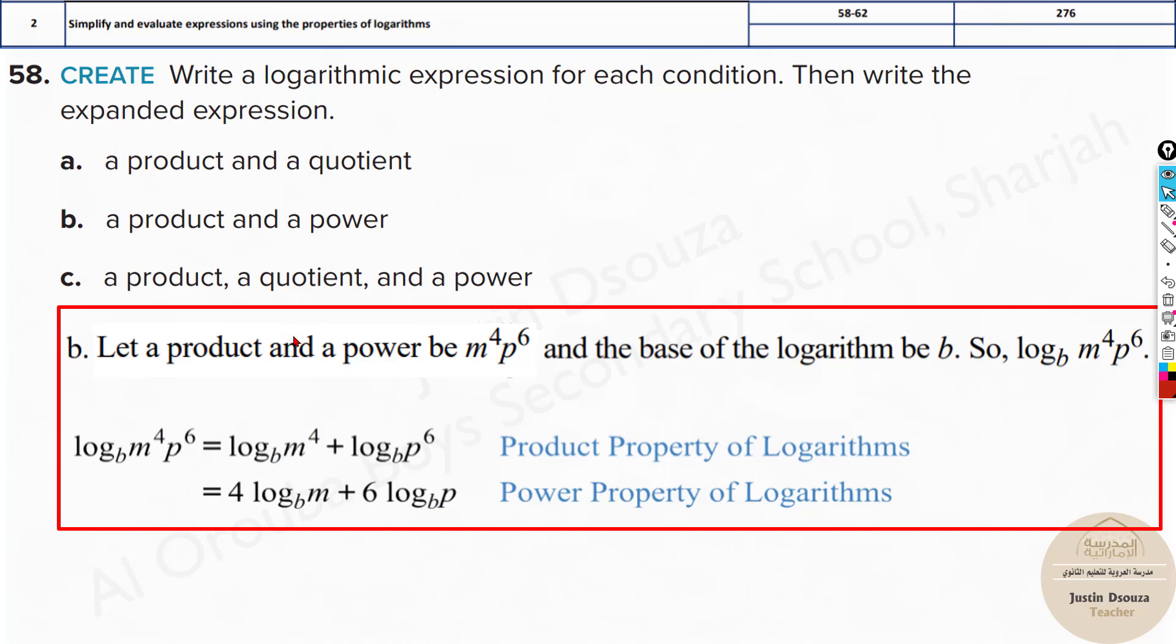Over here, there are powers and products. There's a power rule as well, which states that if you have any power, say log m to the power n, this power can be multiplied - it will be n log m. So over here, we have log base 10 (if nothing is written, it's base 10). Log base b m power 4 plus log base b p to the power 6. Whatever is the power can come down. This is the property, this equals this.